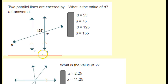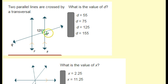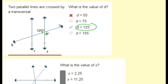Parallel lines cut by a transversal — what's the value of d? These are vertical angles, and vertical angles are congruent, so d equals 125.